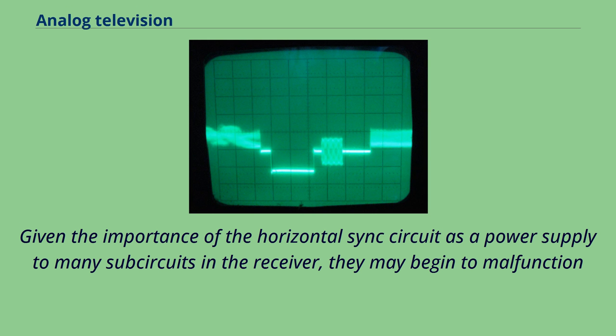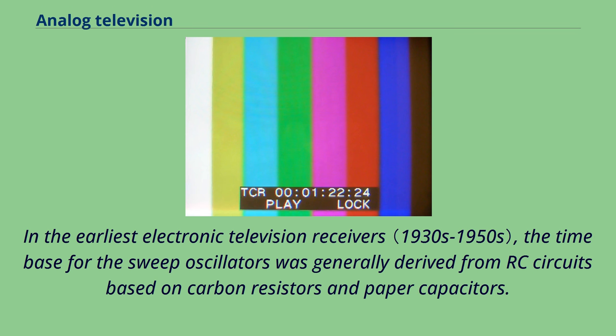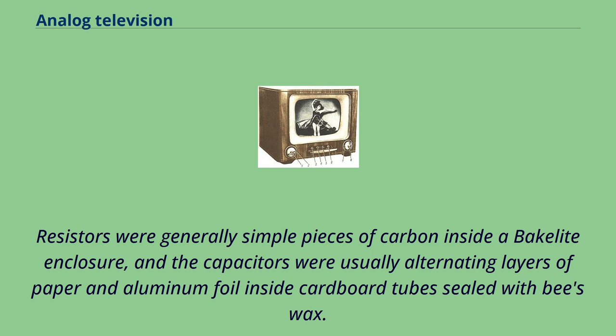Moisture ingress as well as thermal instability of these components affected their electrical values. As the heat from the tubes and the electrical currents passing through the RC circuits warmed them up, the electrical properties of the RC time base would shift, causing the oscillators to drift in frequency to a point that they could no longer be synchronized with the received pulses, causing tearing or rolling.